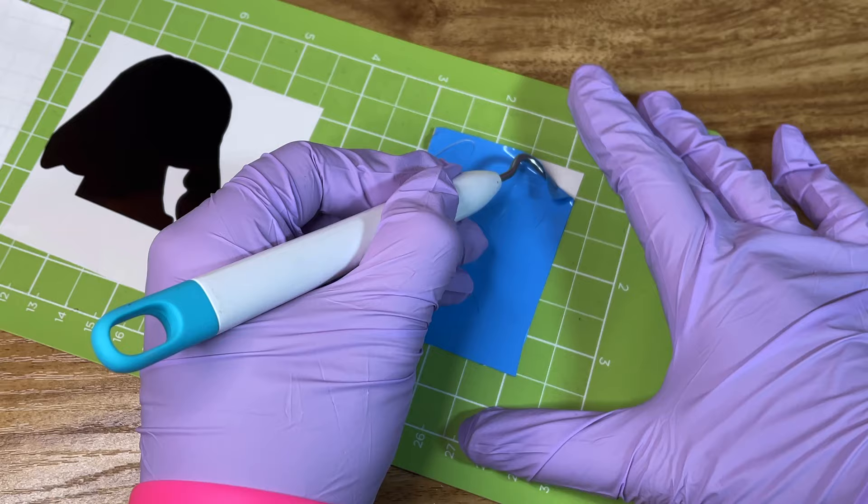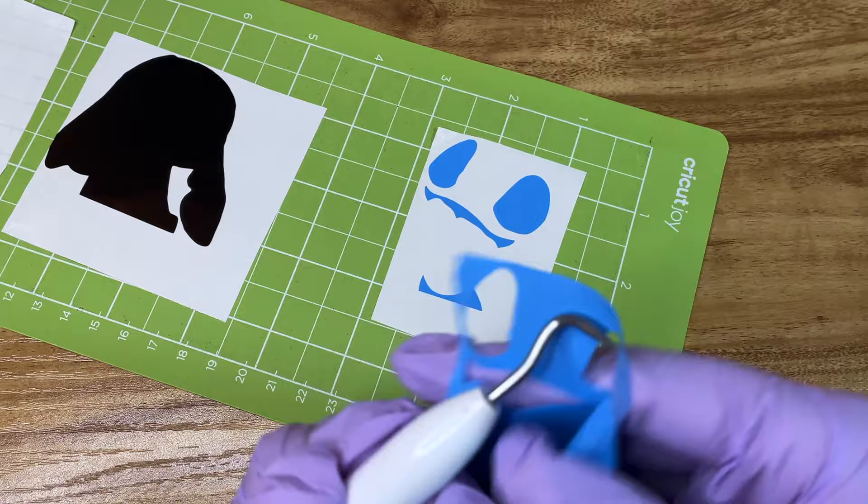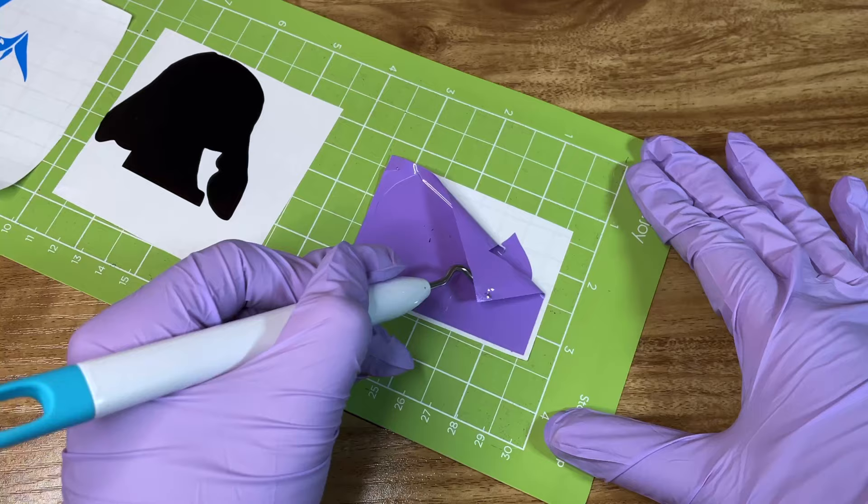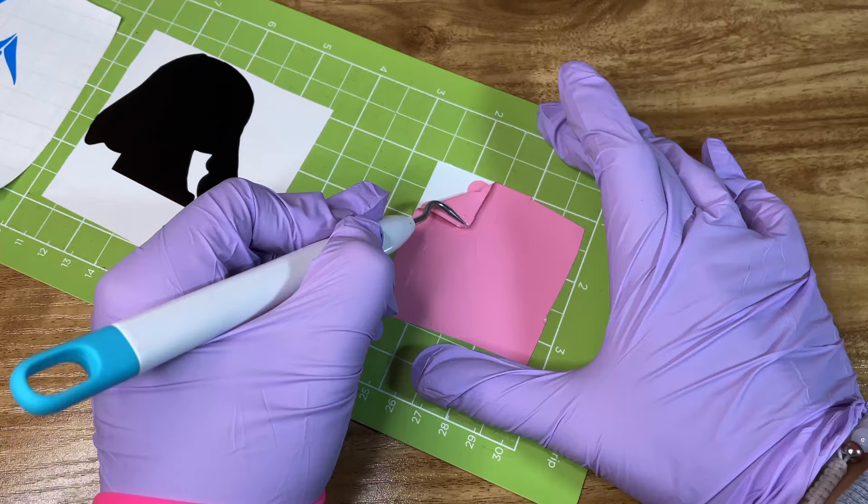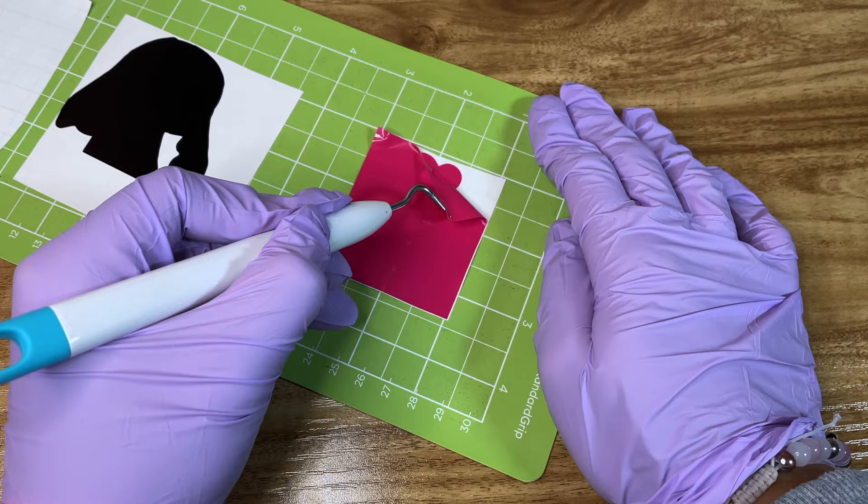Once you are finished cutting all of the vinyl that you need, you're gonna start weeding them. And this is actually my favorite part because it's so satisfying and it's one of the easiest things to do if there isn't too much detail in your vinyl piece.